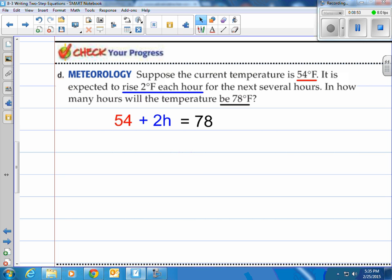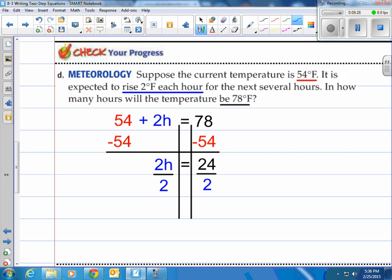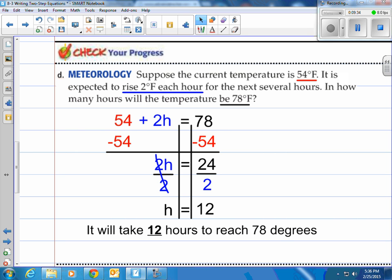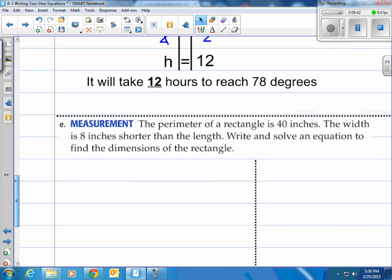So how do we solve it? Let's put our train tracks in there to keep our left and right sides organized. Step 1 is subtract 54 from both sides. On the left side you're left with 2h, and on the right side you get 24. Now to solve this one and get h by itself, we will divide by 2, which is the number in front. The 2s cancel out. We do 24 divided by 2 on the right side and we get 12. So the hours that it will take to reach 78 degrees is 12 hours.